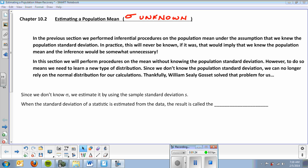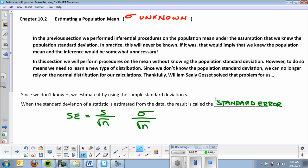If you would like some more information on this gentleman, feel free to Google him. Since we don't know sigma, we estimate it by using the sample standard deviation S, which we talked about before. When the standard deviation of a statistic is estimated from the data, the result is called the standard error. It's the standard deviation of the statistic. We use this formula: S over the square root of N. It's almost identical to sigma over the square root of N, but of course we don't know sigma.